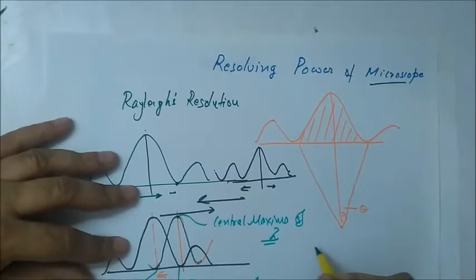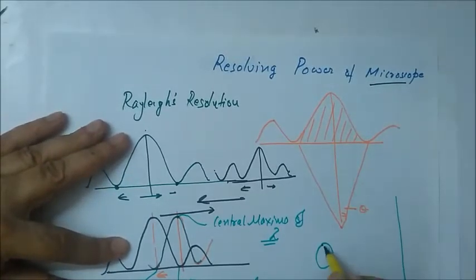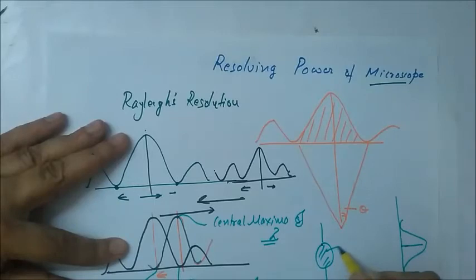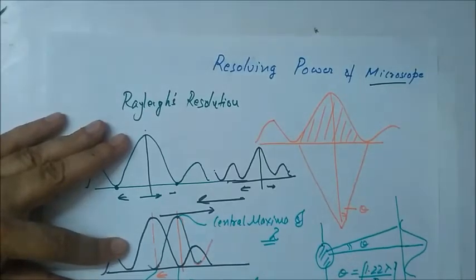One more thing we need to know before we proceed: in case of diffraction by a circular aperture, when diffraction takes place through this circular aperture, the angle theta of the first minima is equal to 1.22 lambda upon D.